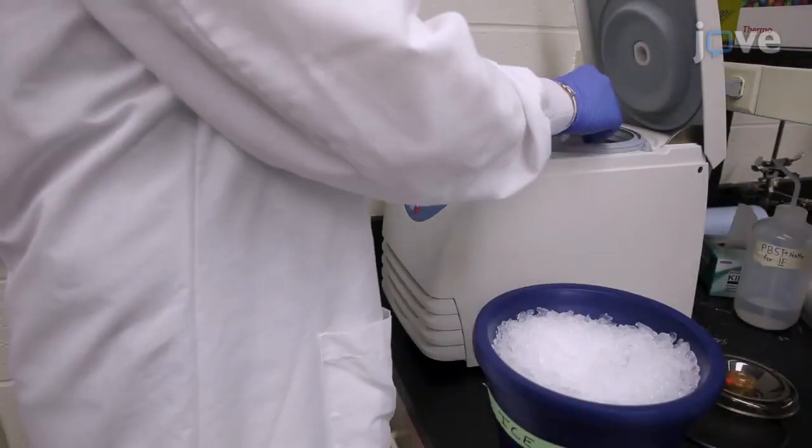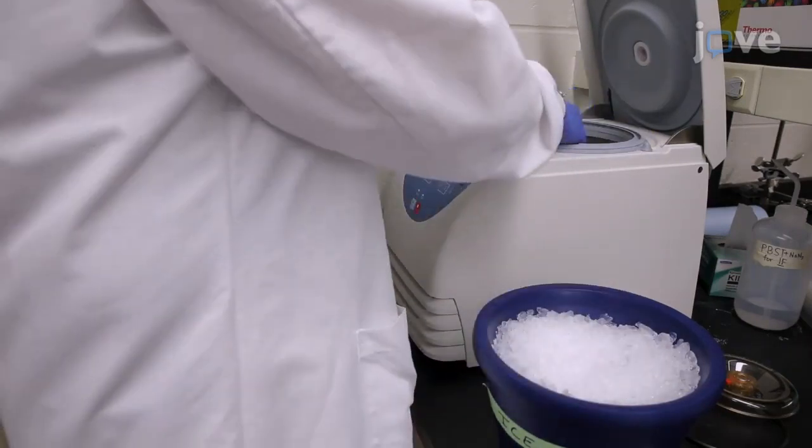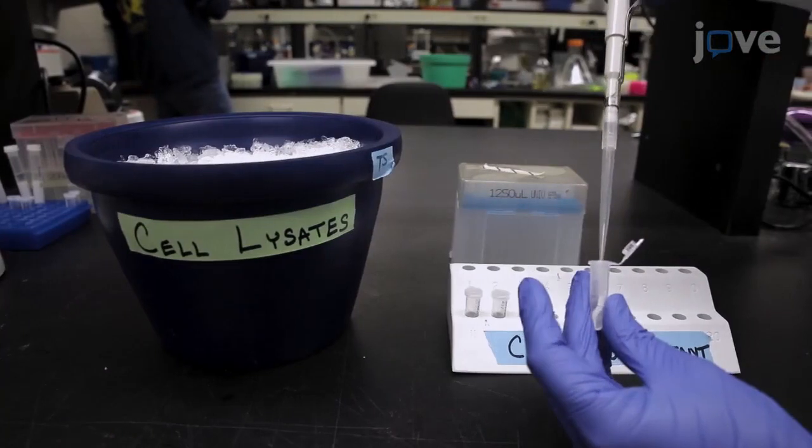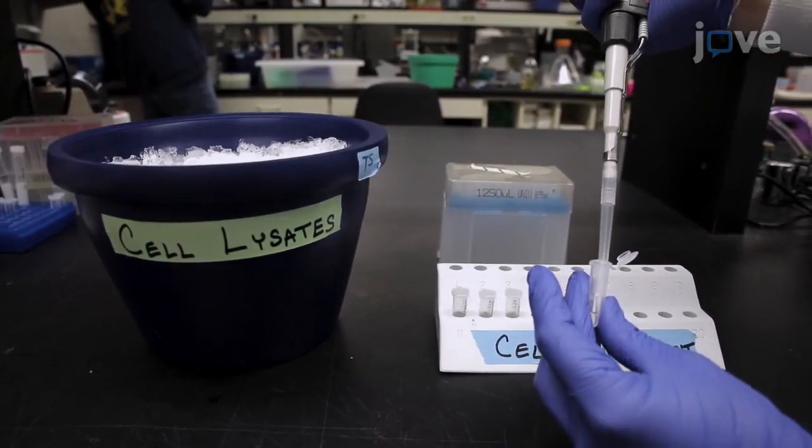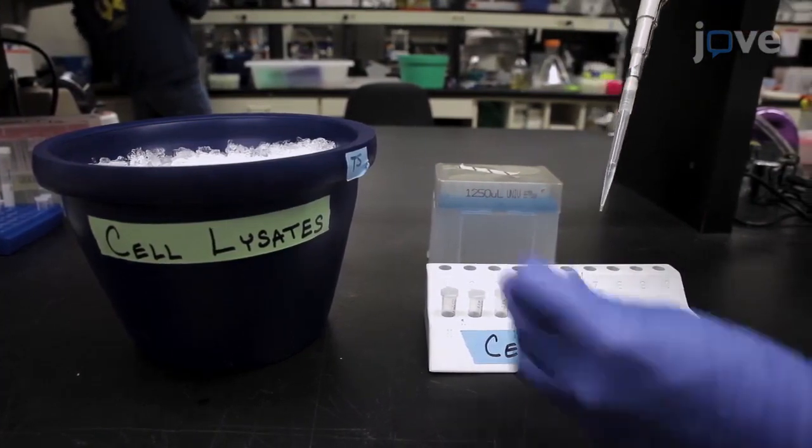Centrifuge at 17,500 times gravity at 4 degrees Celsius for 3 minutes. Then transfer 270 microliters of the supernatant to each of three new 1.7 milliliter microcentrifuge tubes.